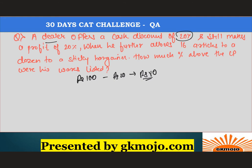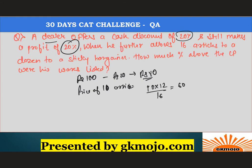16 articles to a dozen means the price of 16 articles will be the price that was supposed to be for a dozen, that is 12 articles. So the price of one article is 80 multiplied by 12, divided by 16. This comes out to be 60. He still makes a profit of 20 percent.